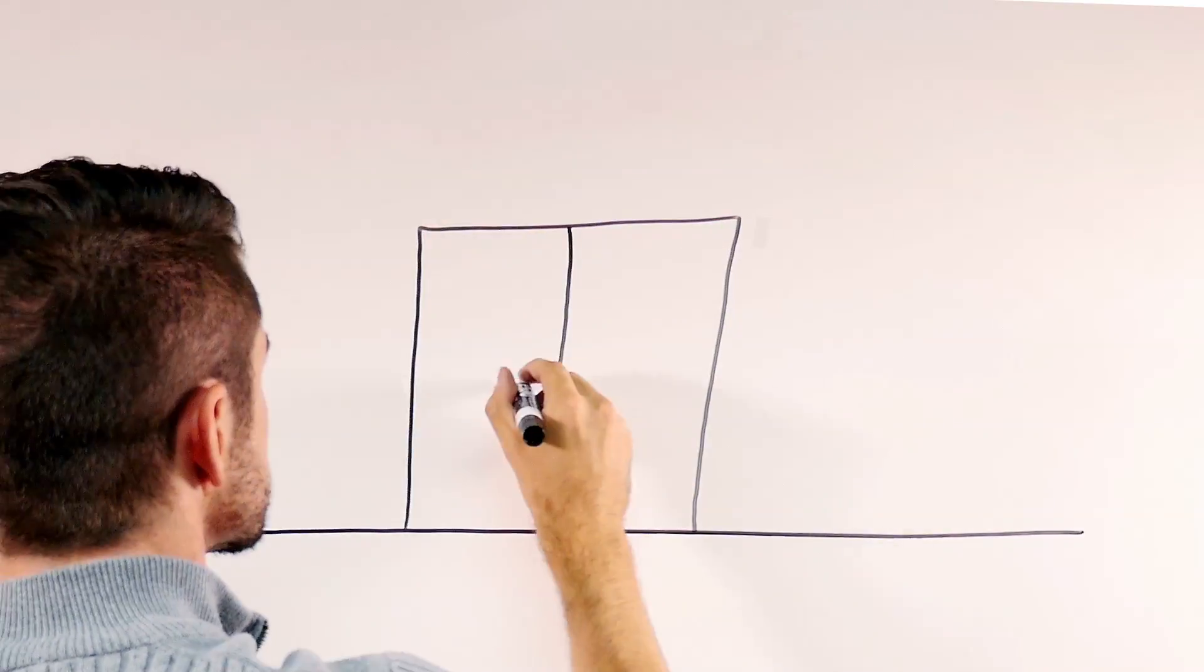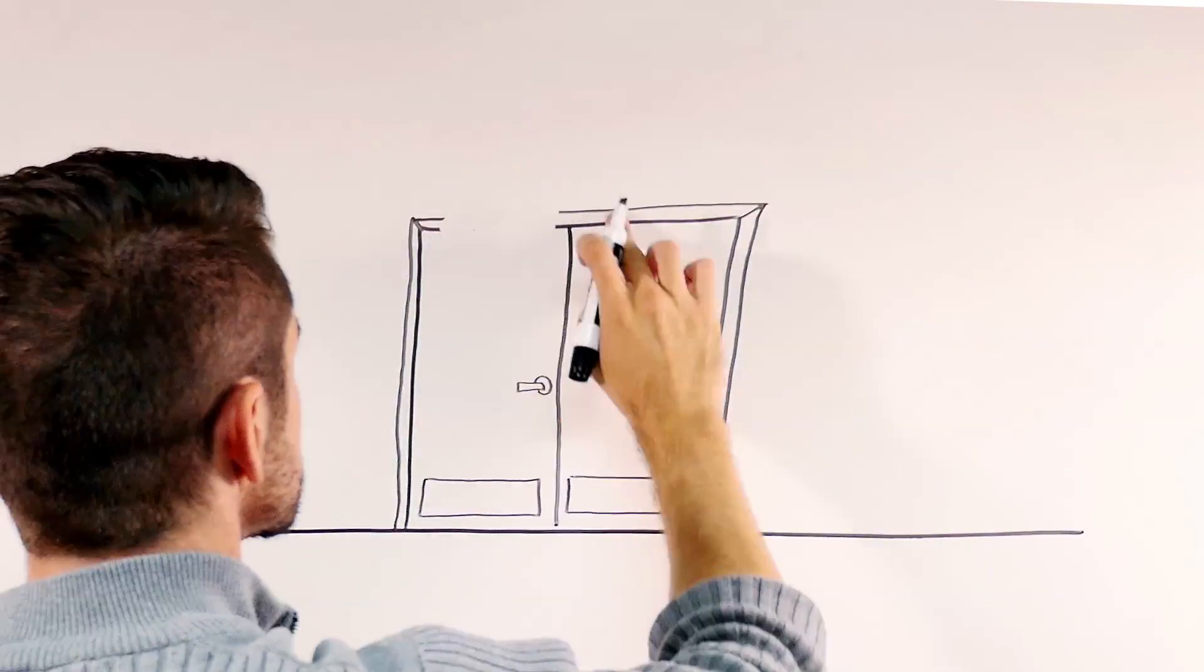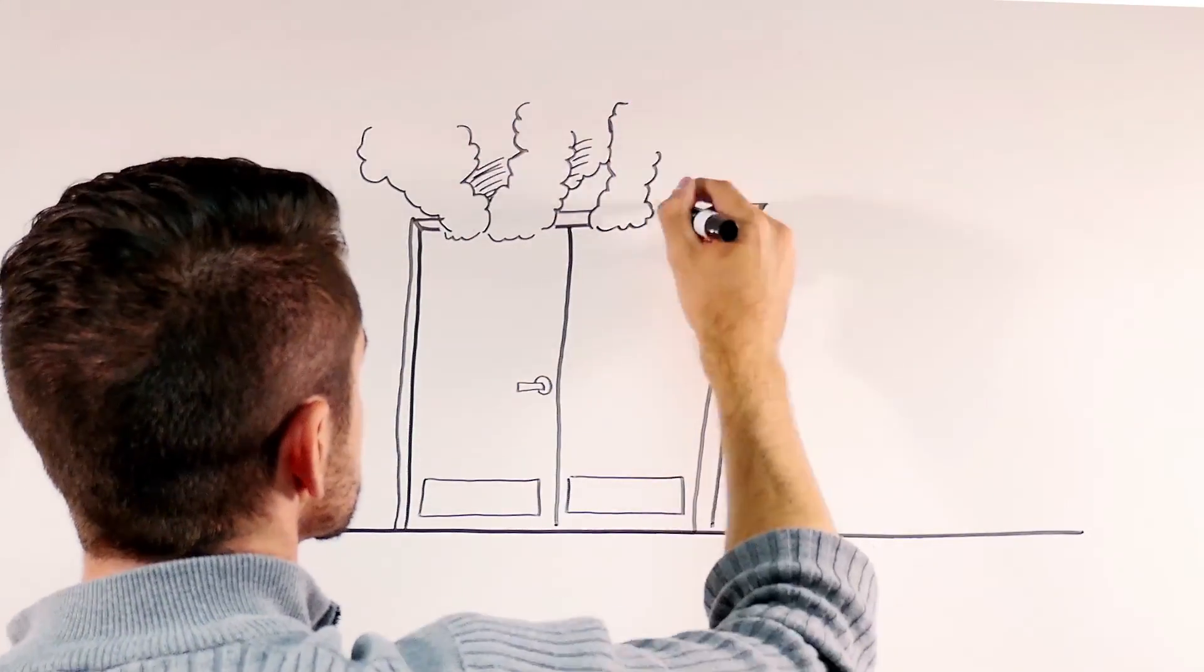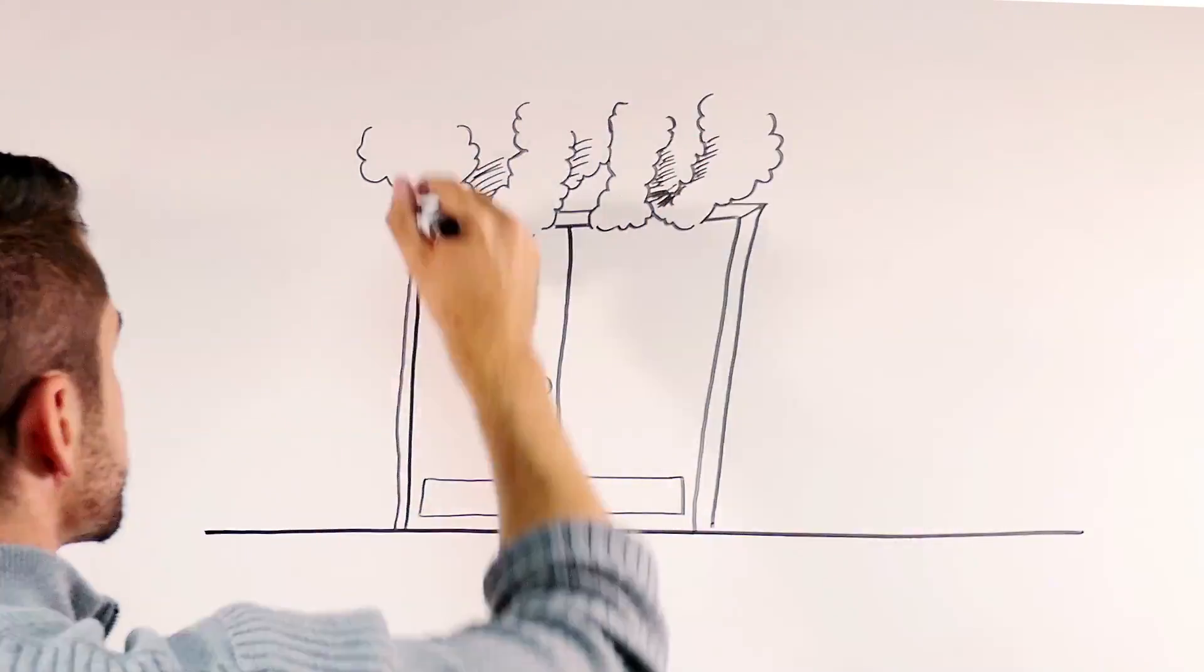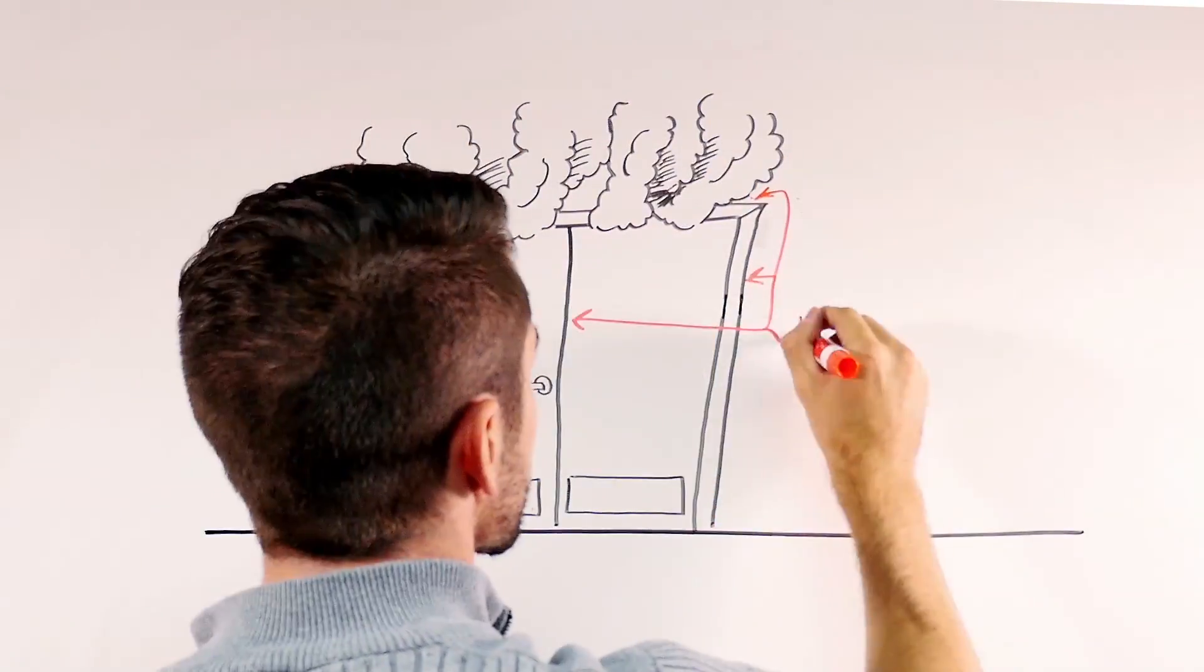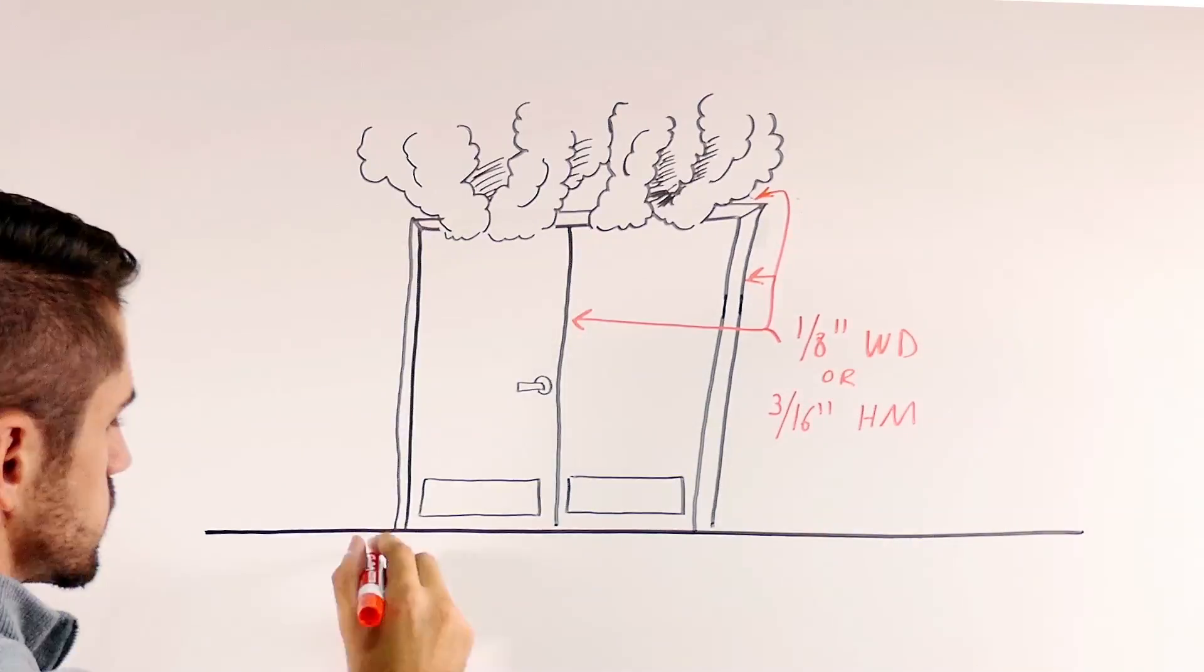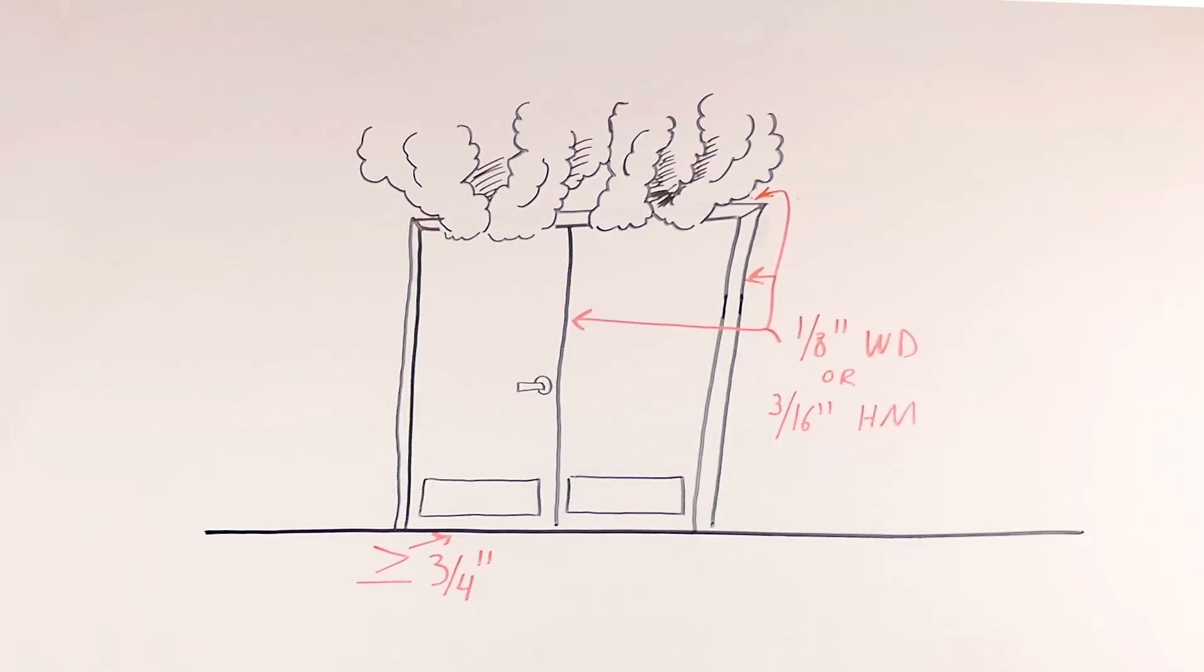Clearances at the head and jambs and at the meeting stiles of pairs is limited to 1⅛ inch maximum for wood doors and 3/16 inch maximum for hollow metal doors. The clearance at the bottom of the door must be no more than ¾ of an inch.